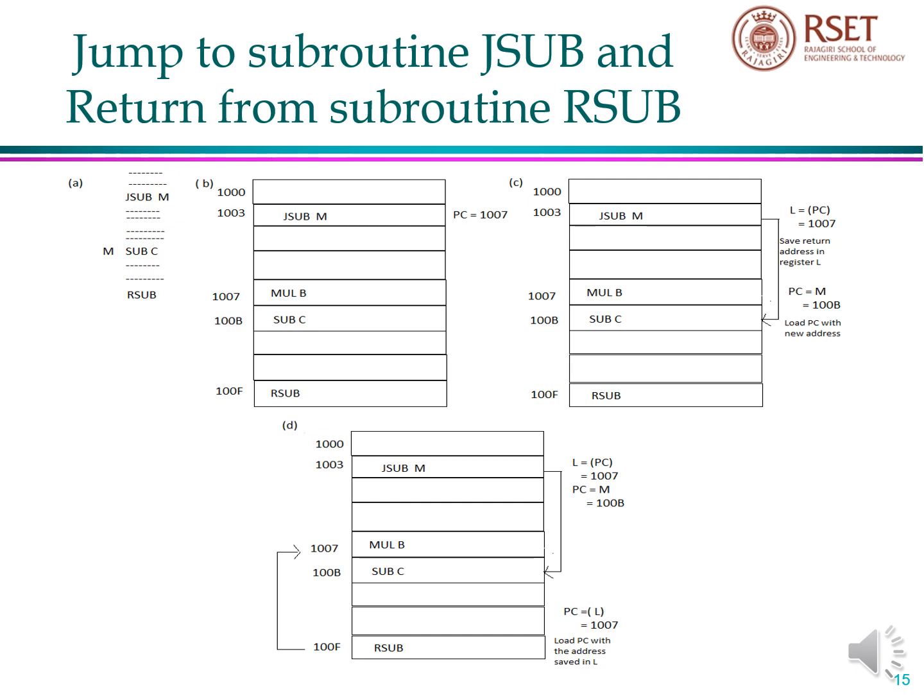Jump to subroutine JSUB and return from subroutine RSUB. Consider the program: JSUB M means jump to the subroutine with the label M. Let JSUB M have a memory address 1003. Since it is a 4-byte instruction, the next instruction is available in location 1007. While JSUB is taken into CPU for execution, PC will increment to the address of the next instruction, that is 1007. Since JSUB is already a jump instruction, 1007 is to be saved in register L so that on return from the subroutine, it will continue its execution from 1007. The new address 100B, which is the subroutine address, is loaded into the program counter. Once the execution of subroutine is over, it will return from it using the RSUB instruction. The previous content of PC, which is 1007, is restored to it from the L register.